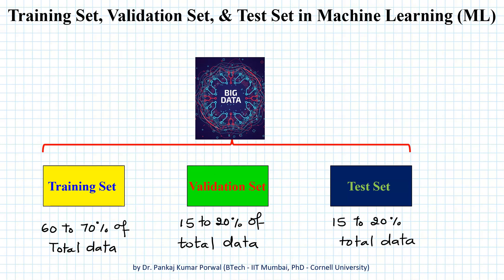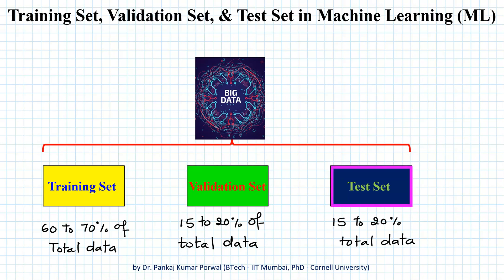The three data sets are called training set, validation set, and test set. In the training set we have 60 to 70 percent of total data. In the validation set we have around 15 to 20 percent of total data, and in the test set we have 15 to 20 percent of total data.